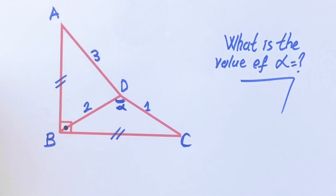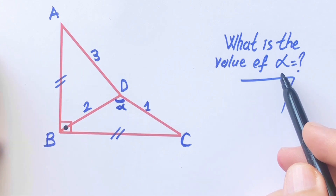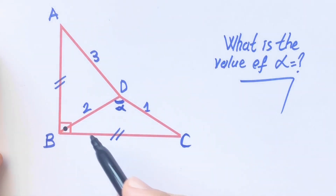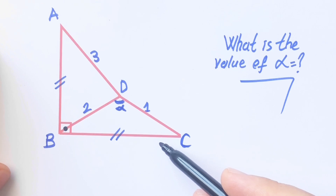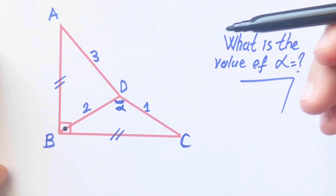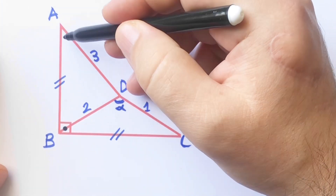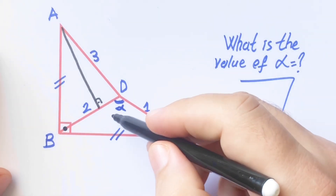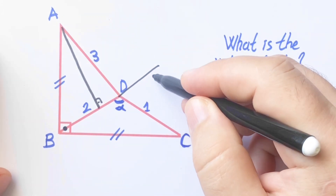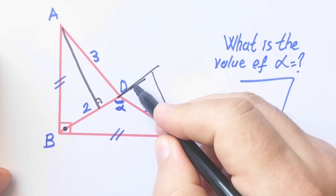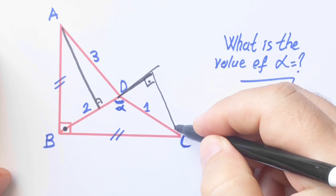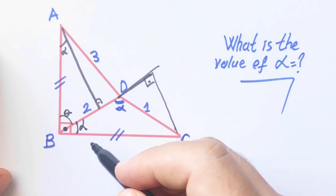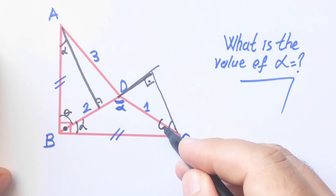Hello everyone. In this video we are going to calculate the value of alpha. BD is 2 units, AD is 3 units, and AB is 1 unit. These two sides are equal. To find alpha, I want to construct two congruent triangles, so let's draw a perpendicular line. Let's call this angle alpha and this angle theta.